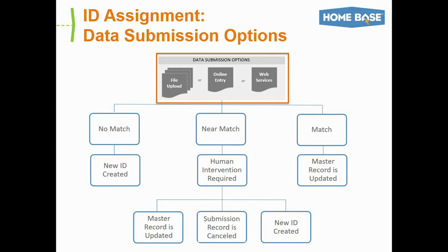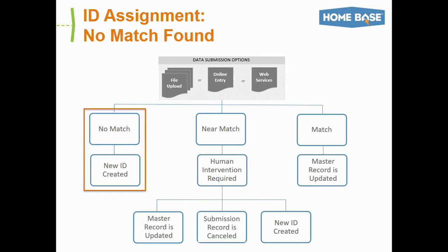When data is submitted to UID, it can run through one of three paths. The first is the no match path. This occurs when you're enrolling a student via PowerSchool and the system cannot find any student currently in the system that matches the one you're enrolling. When this happens, the system automatically creates a new UID for that student and the process is completed.